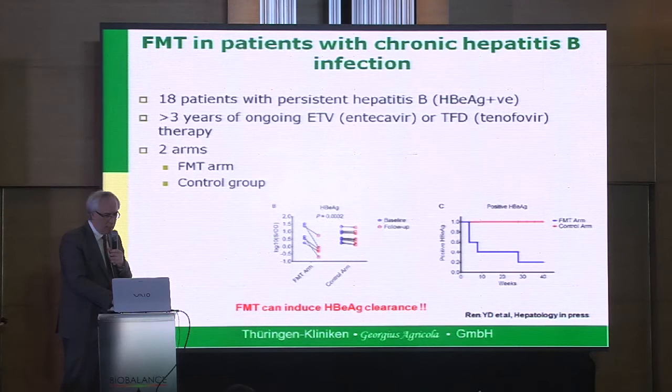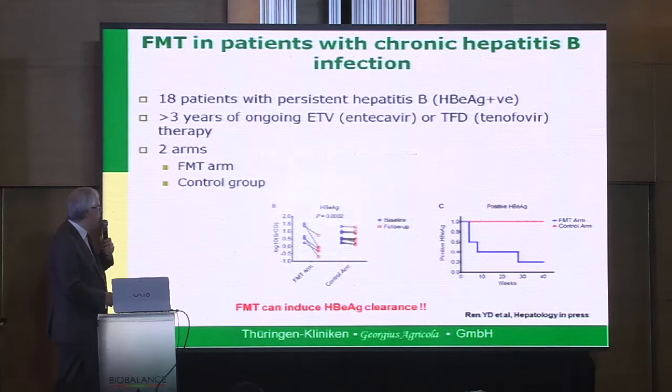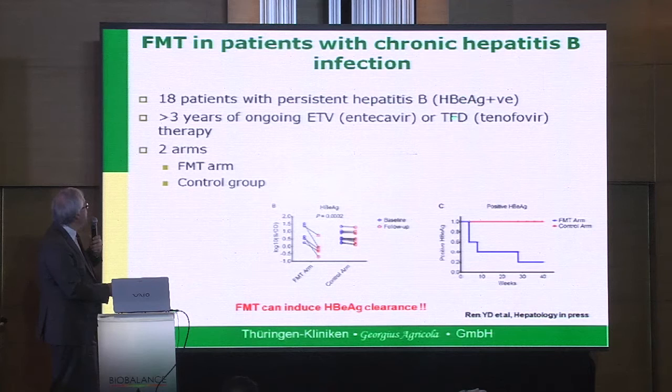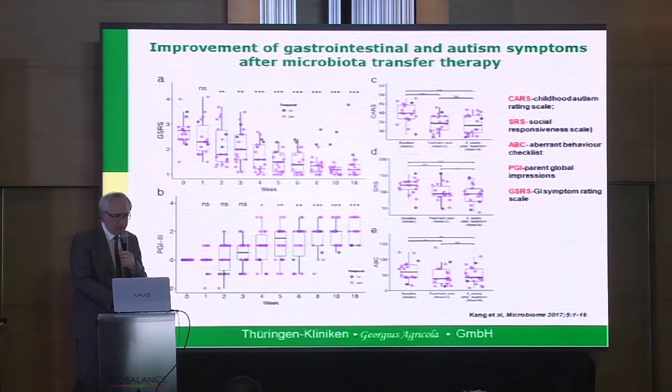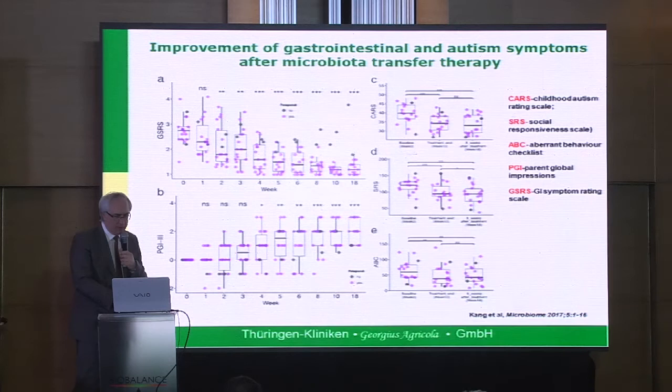What is also fascinating — there is a study from Asia where patients with persistent hepatitis B, all positive for HBe antigen and on more than three years of ongoing entecavir or tenofovir therapy, had FMT that led to clearance of hepatitis B antigen. How it works, no one knows, but it is very interesting. Also fascinating are children with autism symptoms — a study published just a few weeks ago showed that repeated FMT therapy led to significant improvement of gastrointestinal symptoms and also improvement of autism symptoms.